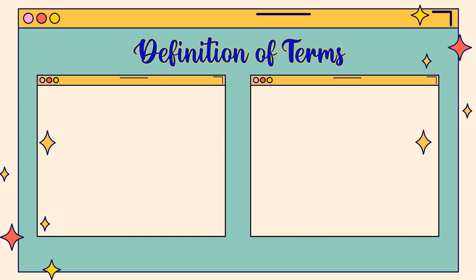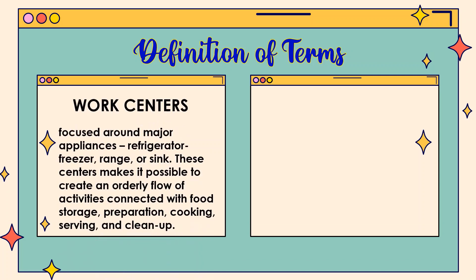Now that we know the most essential learning competency and objective, let's now define the following concepts for you to understand this topic. Are you ready? Let's begin by defining work centers. Kitchen work centers are areas of a kitchen dedicated to a particular task. They are also called work zones.